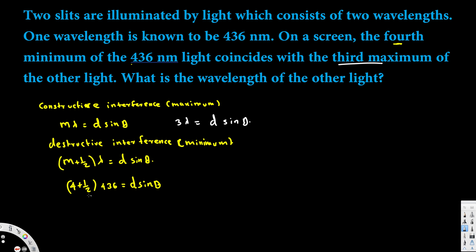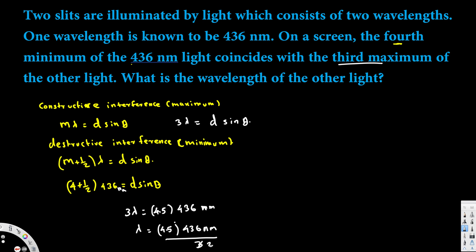Both expressions equal d·sinθ, so we can equate them: 3λ = (4 + ½)·436 = 4.5 × 436 nanometers. Therefore, λ = (4.5 × 436) / 3. Since 4.5/3 = 1.5, this gives λ = 1.5 × 436 = 654 nanometers. That is the wavelength of the unknown light. I hope this helps — thanks for watching.